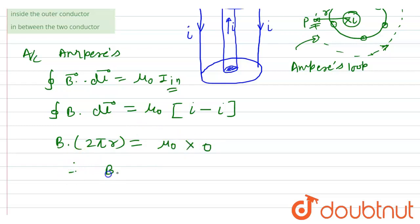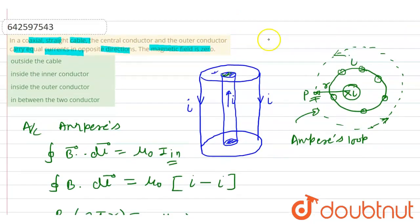Due to this wire this combination of wire the outside magnetic field will be 0. The answer will be outside the cable. Thank you.